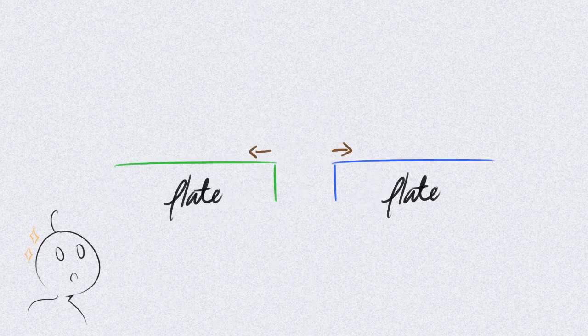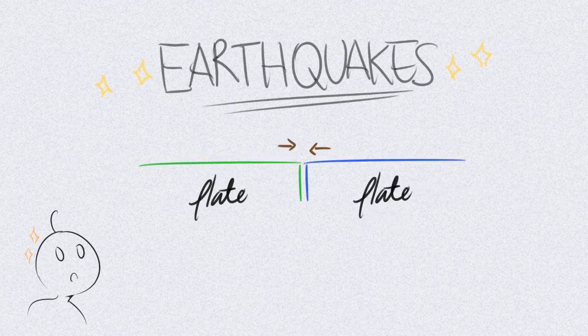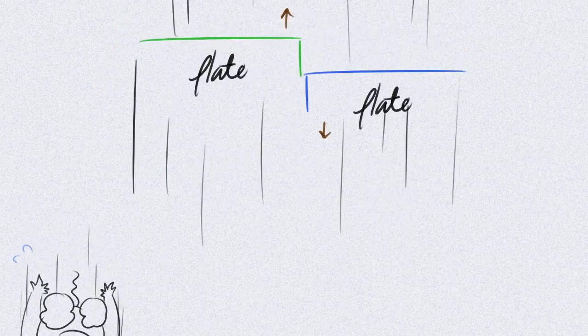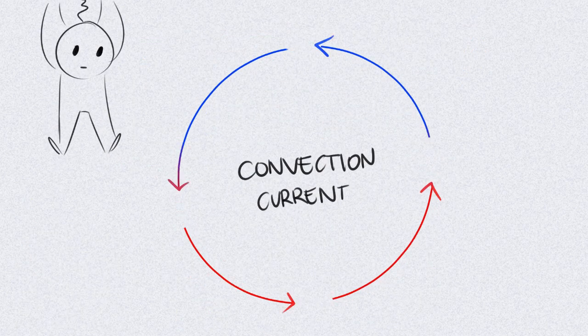This shaking of the ground is what we call an earthquake. An earthquake happens when the plates move. These plate movements are caused by an unequal distribution of heat within the Earth's interior.